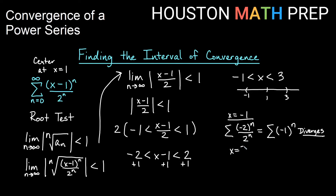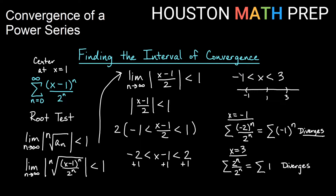Checking x equals positive 3: plugging in gives the sum of (3 minus 1) to the n over 2 to the n, which is 2 to the n over 2 to the n, so every term equals 1. The divergence test tells us this will not converge — 1 plus 1 plus 1 forever diverges. So this endpoint is not included either. Our interval of convergence is the open interval from negative 1 to 3, with neither endpoint included.